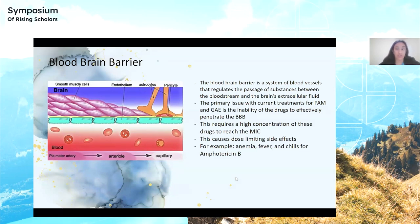Whether it be the pathogen or the therapeutic agent treating the pathogen, everything has to traverse the blood-brain barrier, which is a system of blood vessels that regulates the passage of substances between the bloodstream and the brain's extracellular fluid. The primary issue with amphotericin B and other antifungals in treating PAM and GAE is their inability to effectively penetrate the blood-brain barrier, and because of their high MIC, they have dose-limiting side effects.